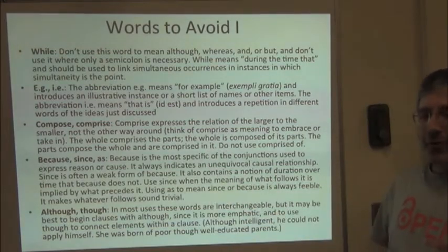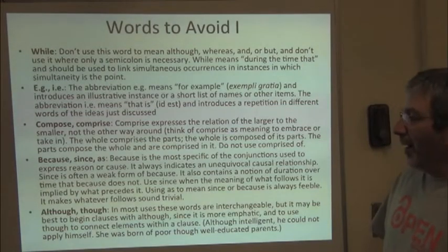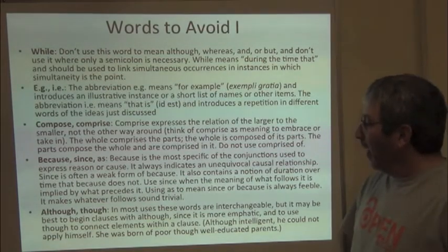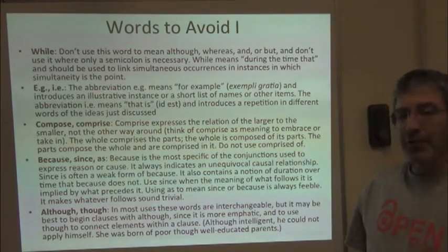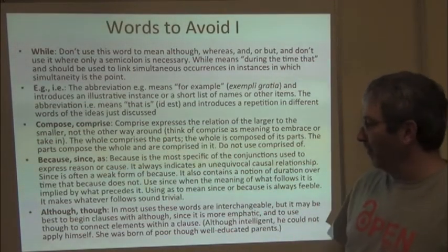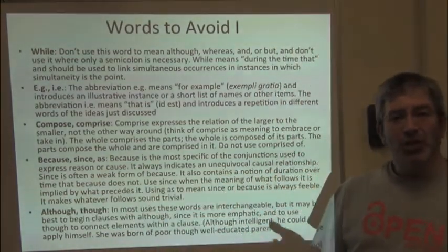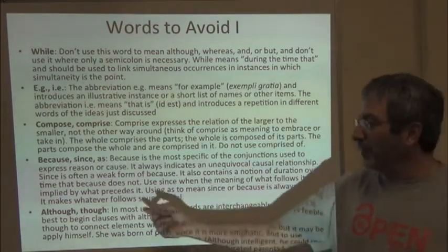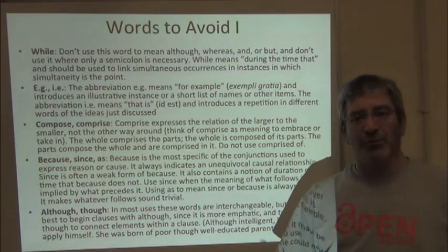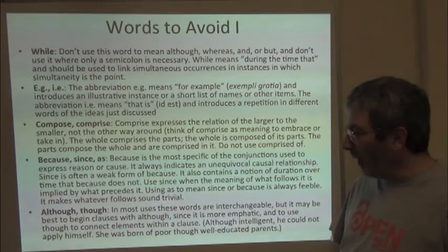A third set of words of wisdom are the causal conjunctions: because, since, and as. These conjunctions express reason or cause. Perhaps the strongest of the three is 'because' — 'this happened because that happened' — that's direct attribution of cause. 'Since' is a bit more shallow and weak; what follows is implied by what precedes. And 'as' is very subtle and very soft. Use those three in the right places.